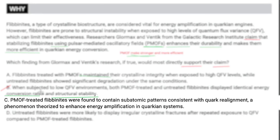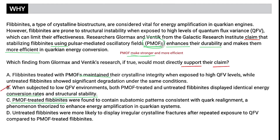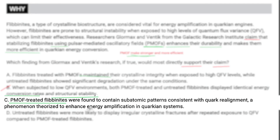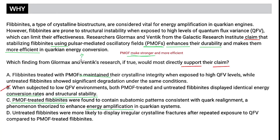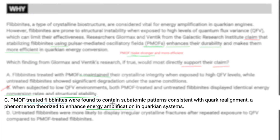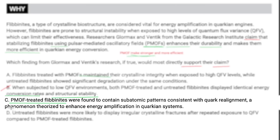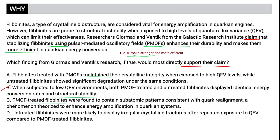Choice C: PMOF-treated phlebonites were found to contain subtonic patterns consistent with quark realignment, a phenomenon theorized to enhance energy amplification in Quarkian systems. The language I understand: we have the PMOF-treated phlebonites, and there's a theory about energy amplification that might go with energy conversion — but it doesn't quite seem 'more efficient.' The biggest issue is it doesn't compare these to the untreated phlebonites. We would need a comparison to say they're actually stronger. So for that reason alone, not to mention the language doesn't line up, I'm getting rid of C.